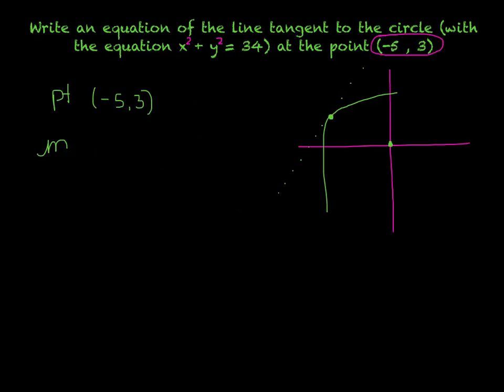The slope, remember talking before, the radius and a tangent line are going to be perpendicular. So I just need to find the slope of this line right here, an opposite reciprocal, to get the slope of my tangent line. The slope of this line is rise 3, run backwards 5, so the slope of this would be 3 over negative 5. So the opposite reciprocal would be positive 5 over 3.